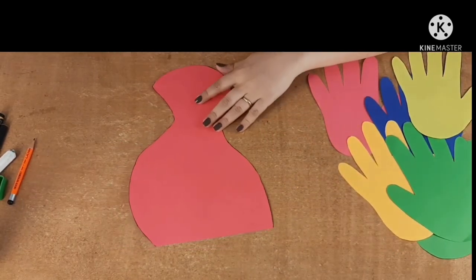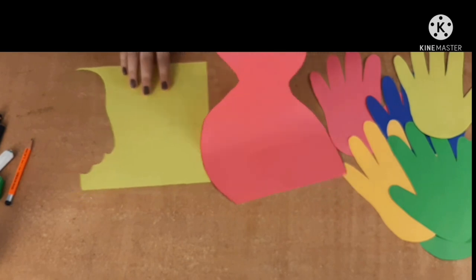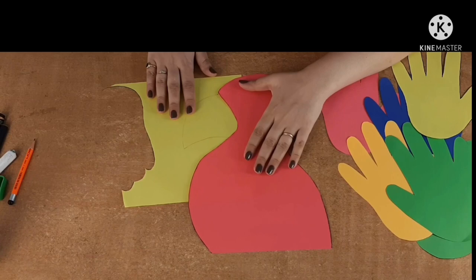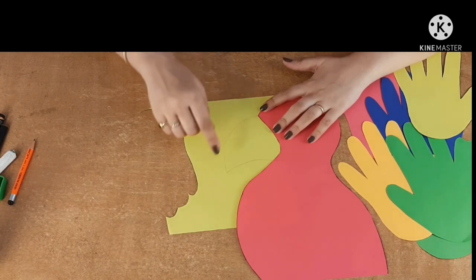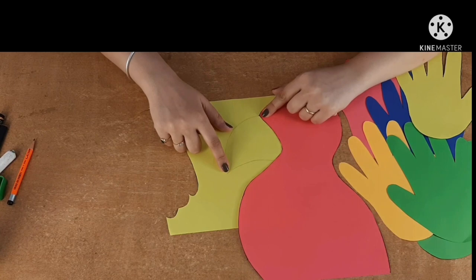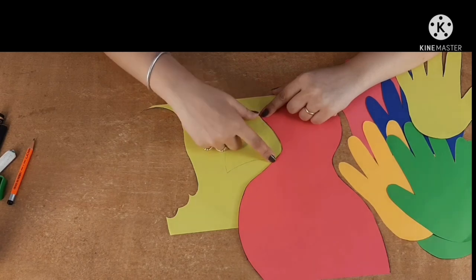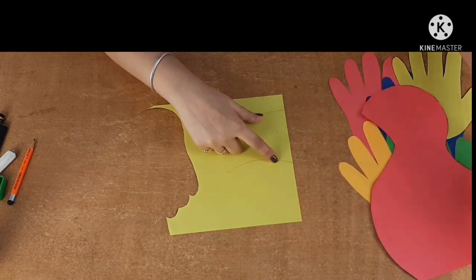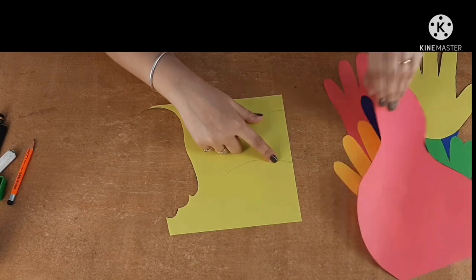So now we have to trace the beak of the bird. Take a yellow sheet and put it under the cut-out and try to figure out how big the beak is. Can you see it? So I want a beak which is fairly big. I have already traced the beak shape. And make sure that when you remove the bird's body, you still have some part left on this side so that you can stick it under the bird's body.